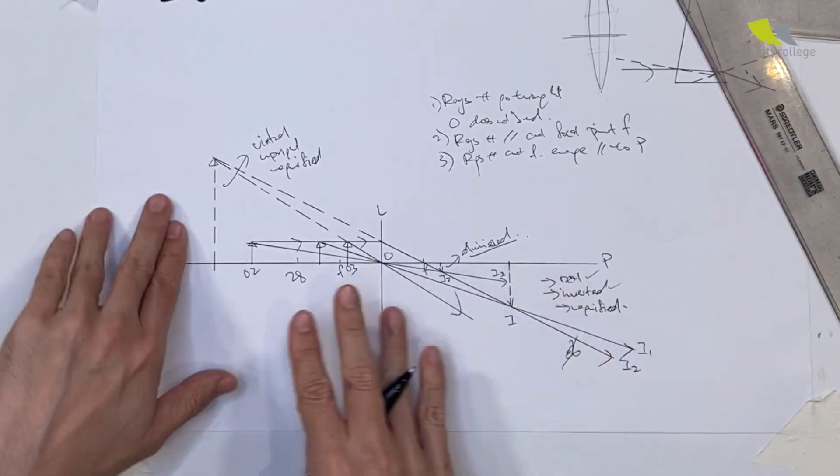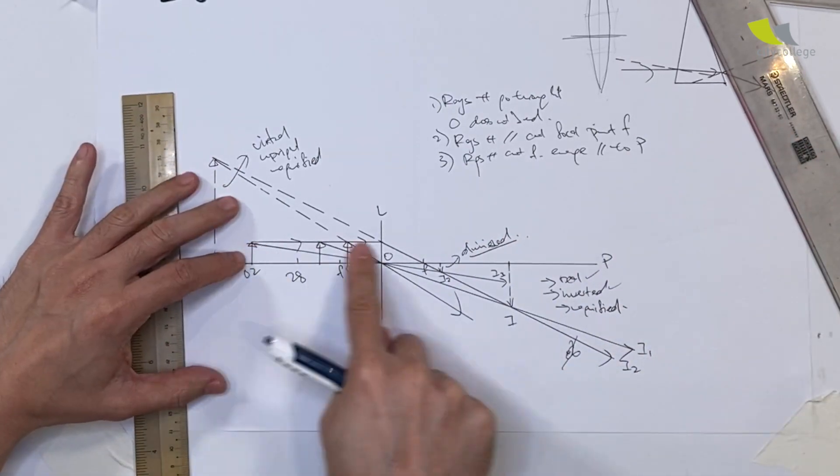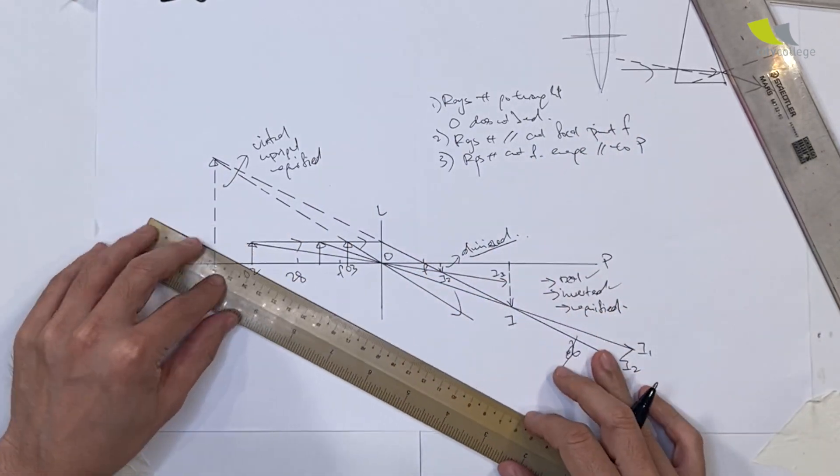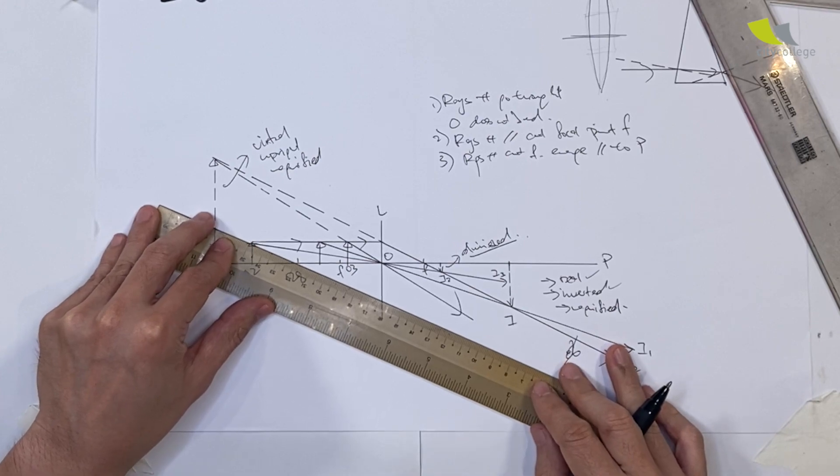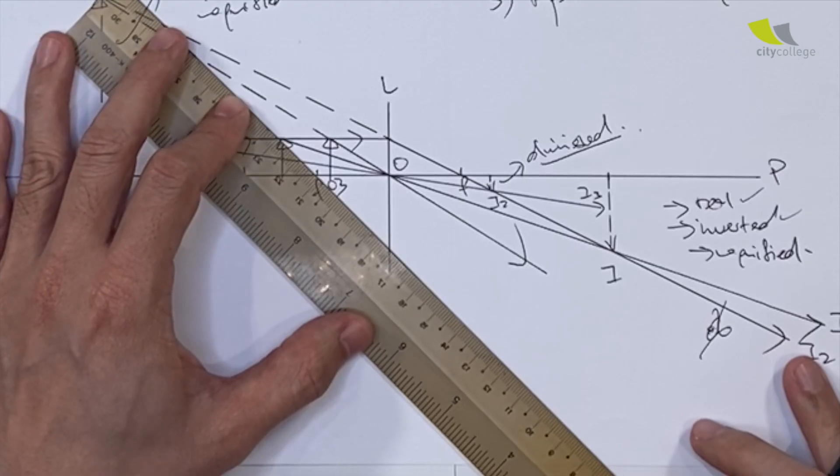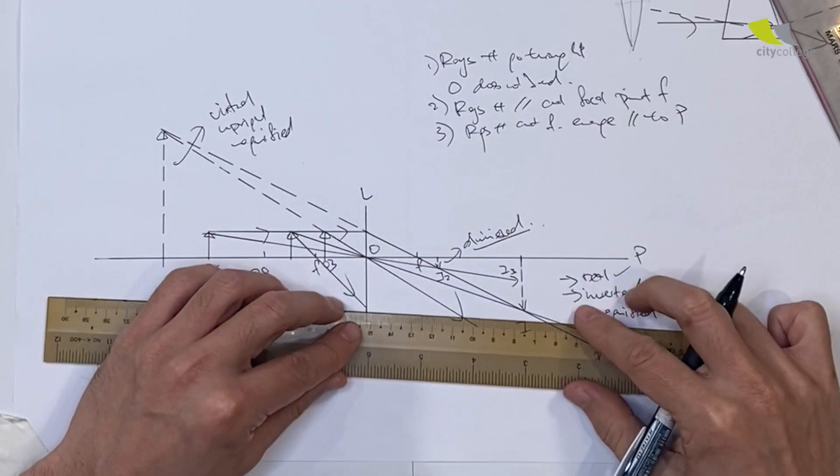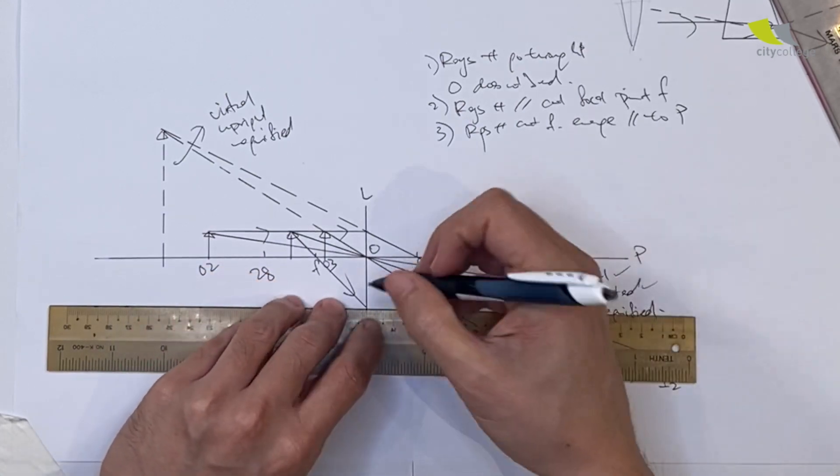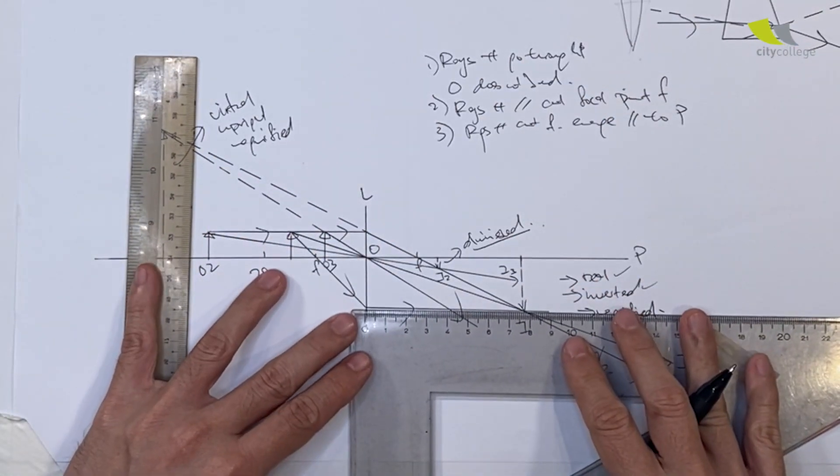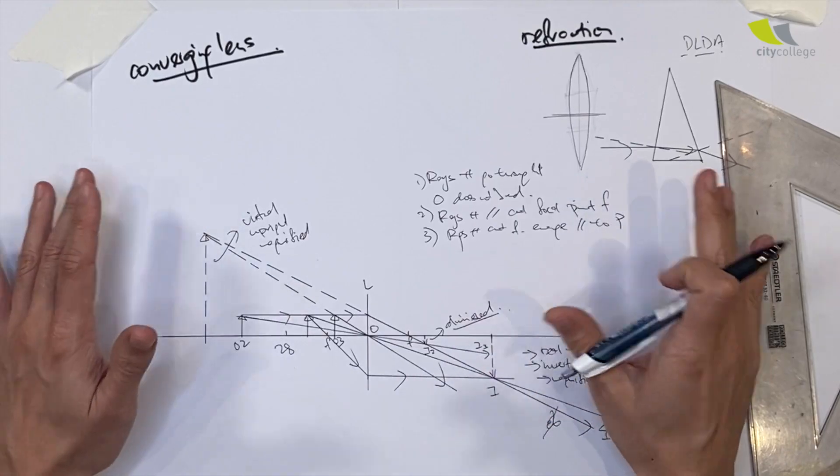You see the three different types of images - based on where you place your object, you get very different images. In exams, if you want to locate the image, all you need is two lines. But sometimes they'll give you a third line that cuts through the focal point. As it cuts through the focal point first, as it emerges it will be parallel to the principal axis. This will prepare you for the questions that are coming up.